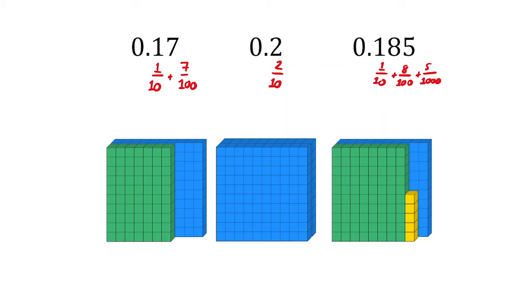If we now ask pupils to put these decimals in order, they will tell us that 0.17 is the smallest, 0.185 comes next, and 0.2 is the largest of these three decimals.